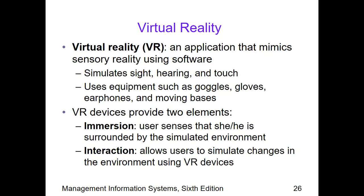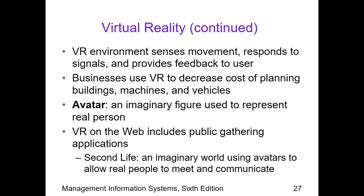The VR devices include goggles, gloves, earphones, and moving bases — which reminds us of certain games done virtually, where you sit on platforms that can move or shake. It's as if we are really in a certain place, like a virtual horror train ride that moves depending on different parts of the experience, making it feel like we're going through a tunnel or moving up and down. The VR environment senses movement, responds to signals, and provides feedback to users.